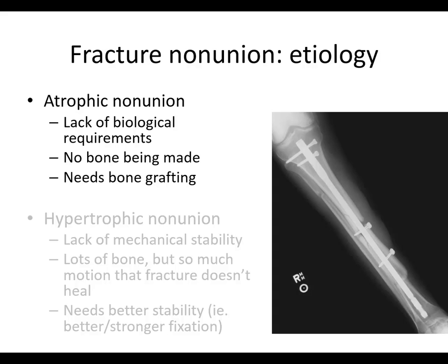There are two ways to think about this. One is atrophic nonunion, which is lack of biologic requirements — no bone being made — and it needs bone grafting. Here you can see an example where there's no bone being made in this little gap. This maybe was an open fracture; they stripped it and put all these cables in, and that little area just didn't heal.